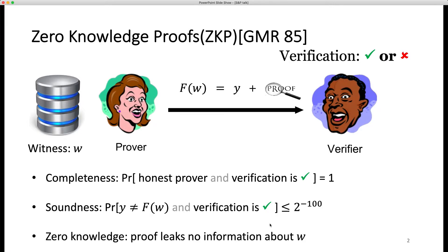There are three important properties of zero-knowledge proofs. Completeness means the verifier would accept if the computation is correct. Soundness means the verifier will accept with negligible probability — very small probability, for example 2 to the power of minus 100 — if the computation is not correct. Zero-knowledge means the verifier learns nothing about the witness of the prover.